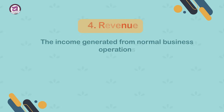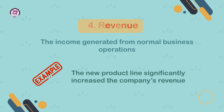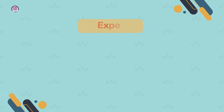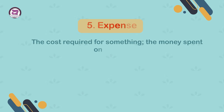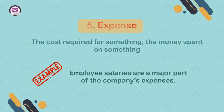4. Revenue. The income generated from normal business operations. Example: the new product line significantly increased the company's revenue. 5. Expense. The cost required for something — the money spent on something. Example: employee salaries are a major part of the company's expenses.